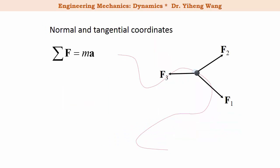We also learned how to use normal and tangential coordinates to study the motion of a particle. The tangential axis is always tangent to the path pointing towards the direction of motion. The normal axis is always perpendicular to the tangential axis, pointing towards the center of curvature.